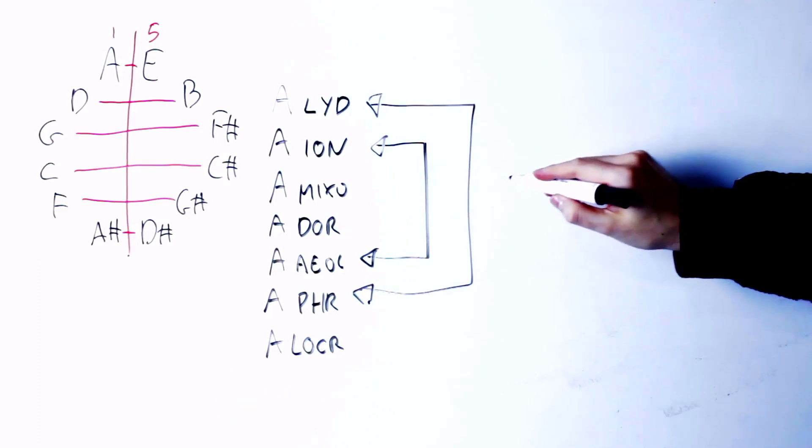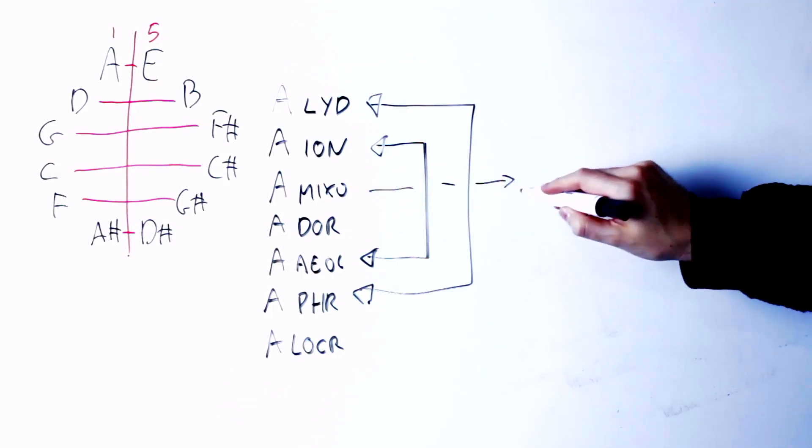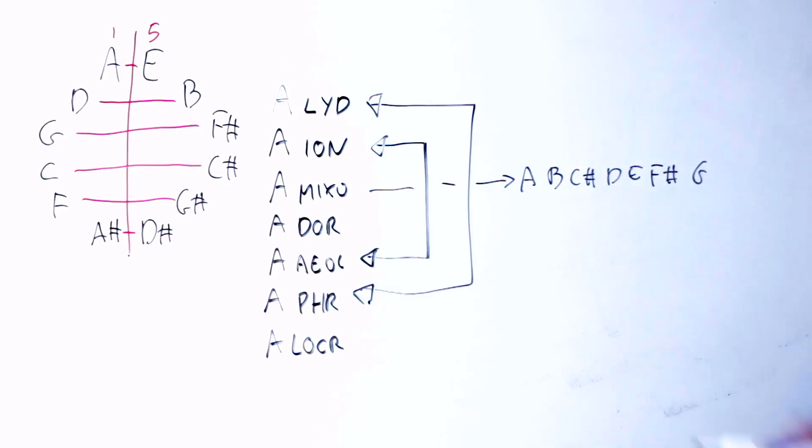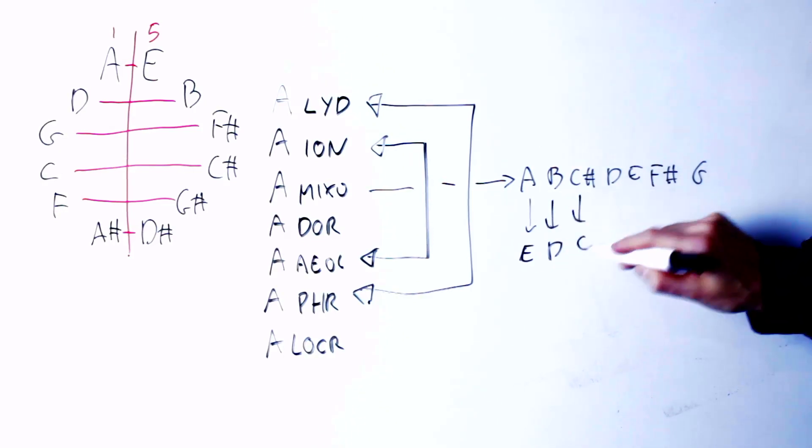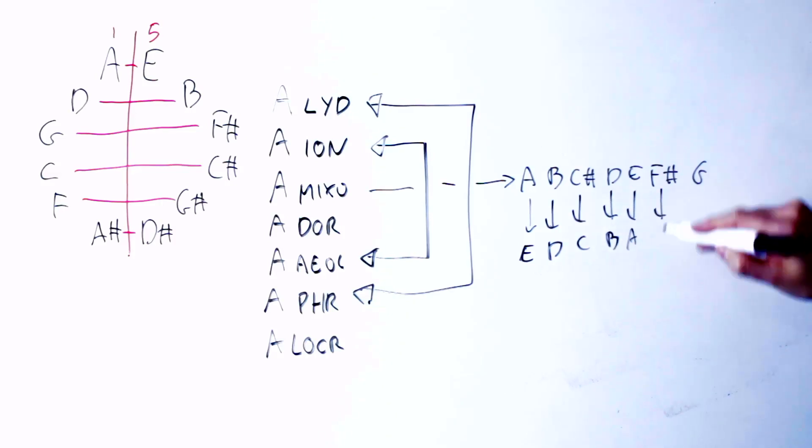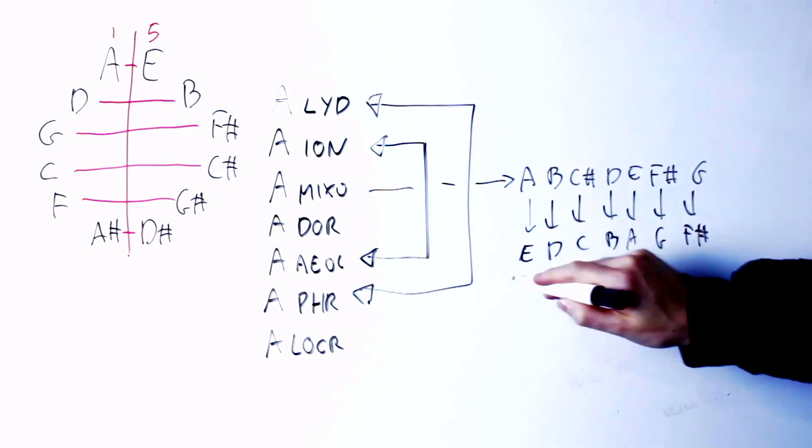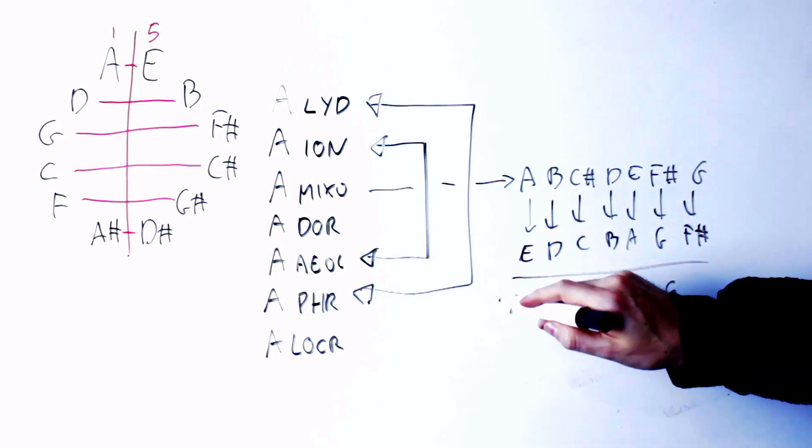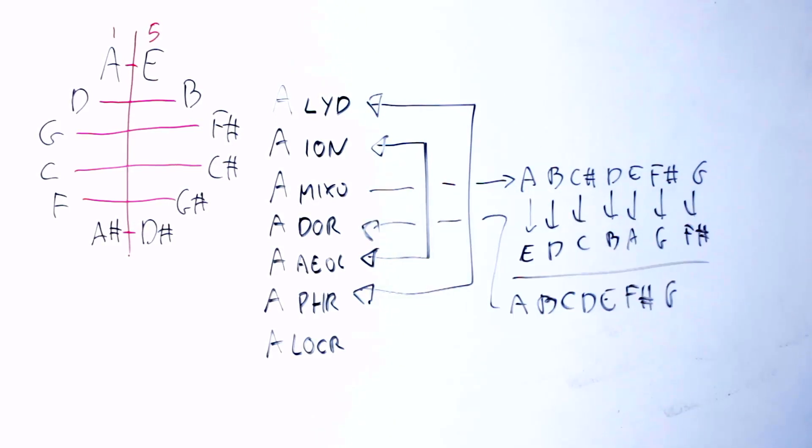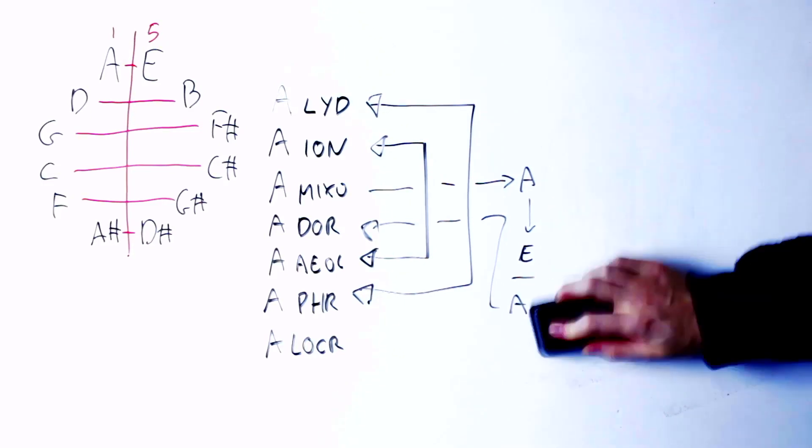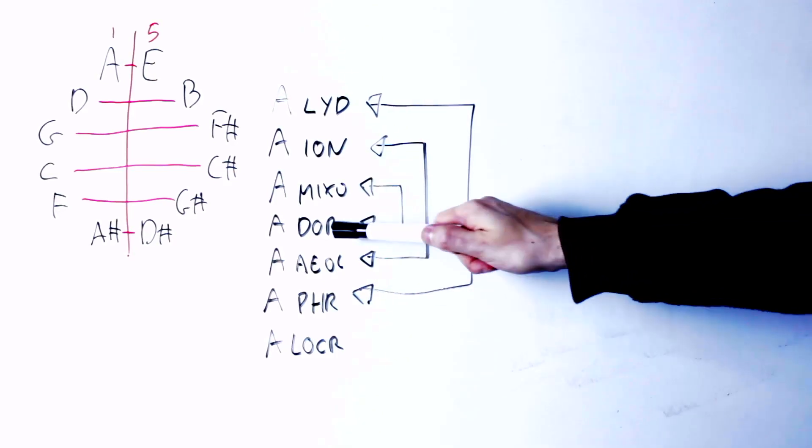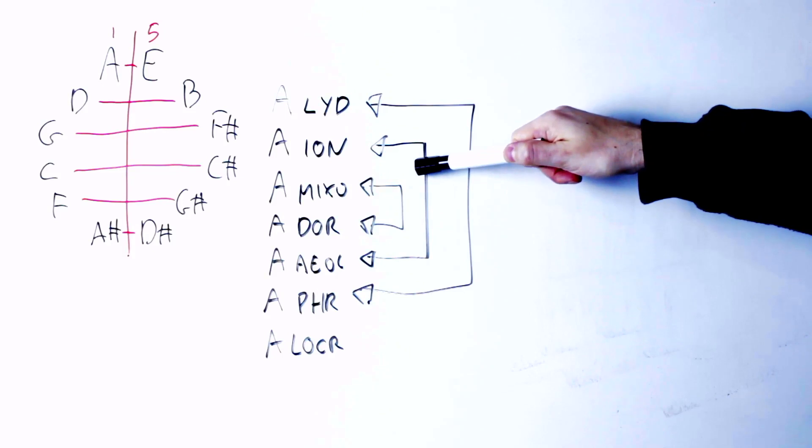What happened with Mixolydian? Well, Mixolydian is A B C sharp D, E F sharp G. So again, A becomes E, B becomes D, C sharp becomes natural C, D becomes B, E becomes A, F sharp becomes G, and G becomes F sharp. So now I get the A Dorian scale. So Mixolydian and Dorian are connected. And of course, if I apply negative harmony again on Dorian, I get Mixolydian back.